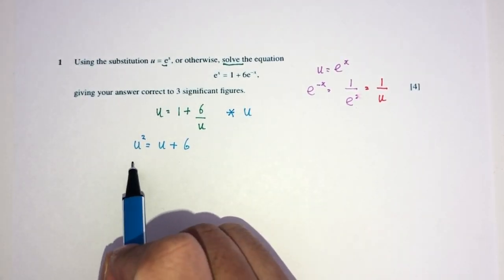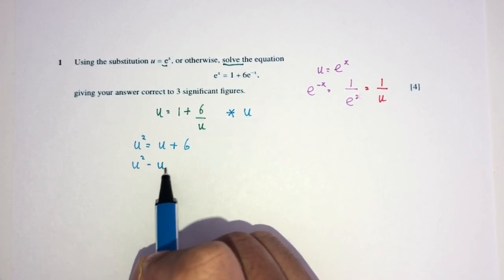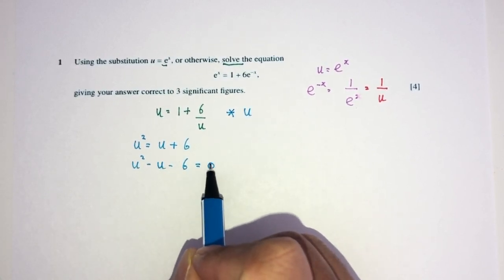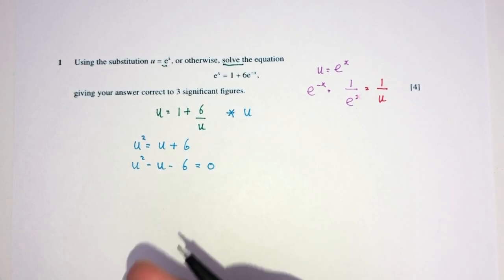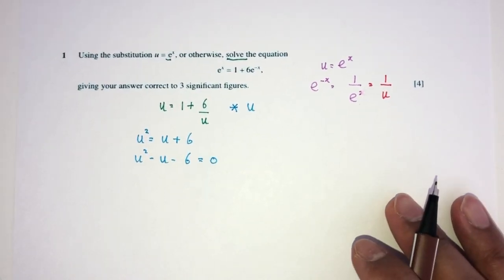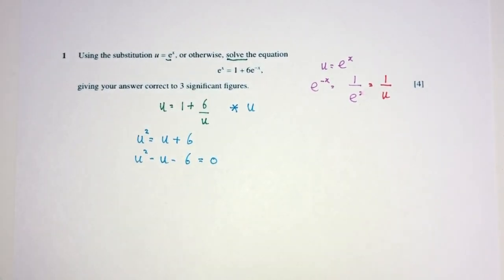6 over u times u will be 6. Now, set everything to one side. You will have u squared minus u minus 6 equal to 0. Now, here we have a quadratic equation. You can solve this by using factorization, or you can use your formula. Two ways of solving the same question.